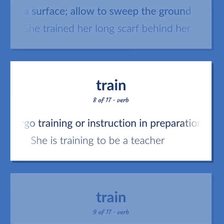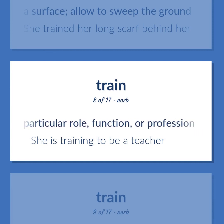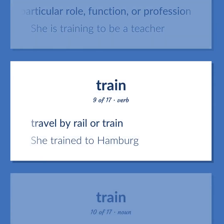Undergo training or instruction in preparation for a particular role, function, or profession. She is training to be a teacher. Travel by rail or train. She trained to Hamburg.